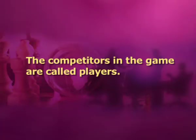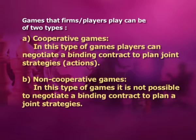The competitors in the game are called players. A game is thus a competitive situation where the market players pursue their own interest and no player can dictate the outcome. Games that firms or players play can be of two types. First is cooperative games, in which players can negotiate a binding contract to plan joint strategies or actions. Second is non-cooperative games, in which it is not possible to negotiate a binding contract to plan a joint strategy.